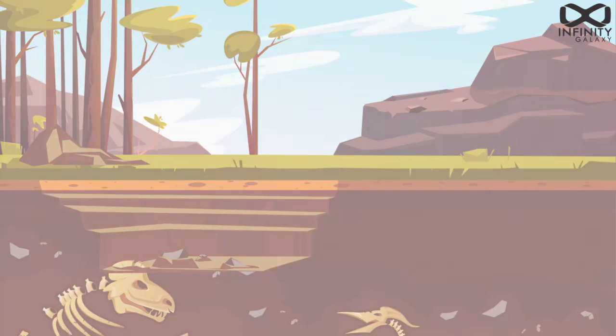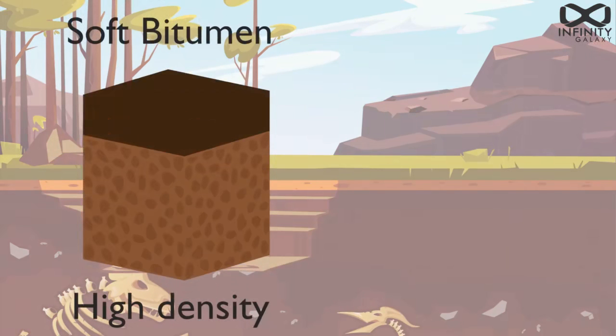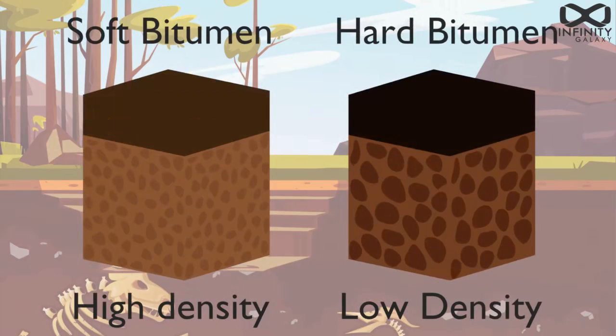Soft bitumen is more suitable for soils with high particle density, such as clay. On the other hand, high penetration graded bitumen works better for soils with low particle density.